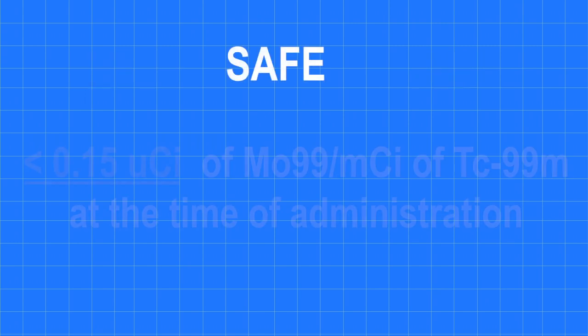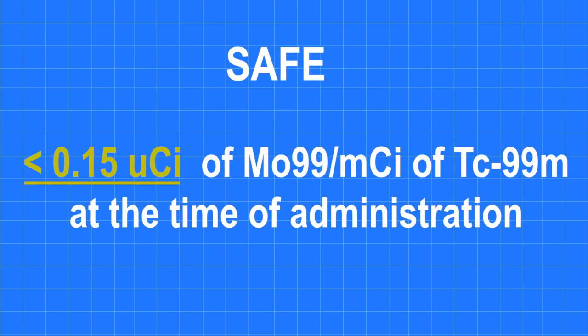The safe quantity for the administration of technetium-99m is less than 0.15 microcuries molybdenum-99 per millicurie of technetium-99 at the time of injection.